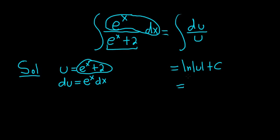And the last thing to do is replace u with what it actually is. So u is e to the x plus 2. So this is absolute value e to the x plus 2. And then plus our constant of integration, capital C.